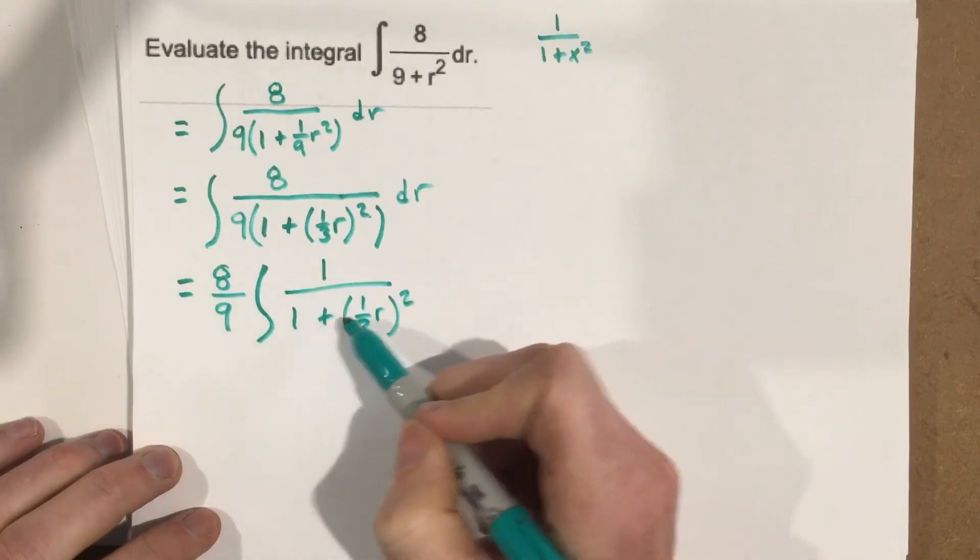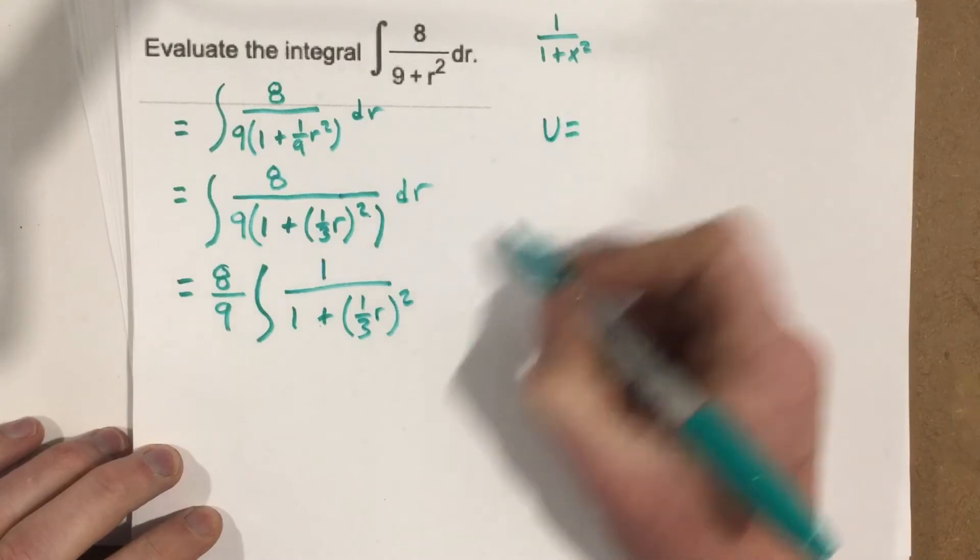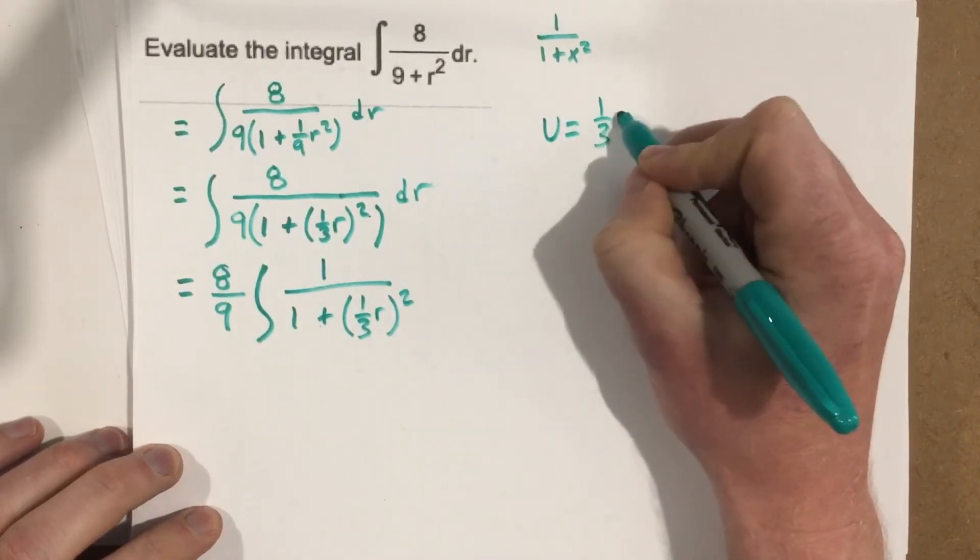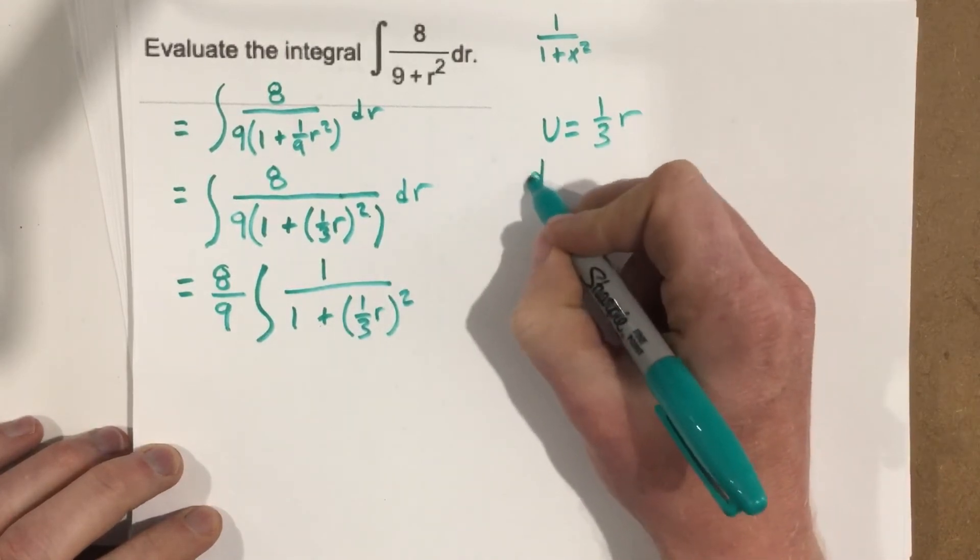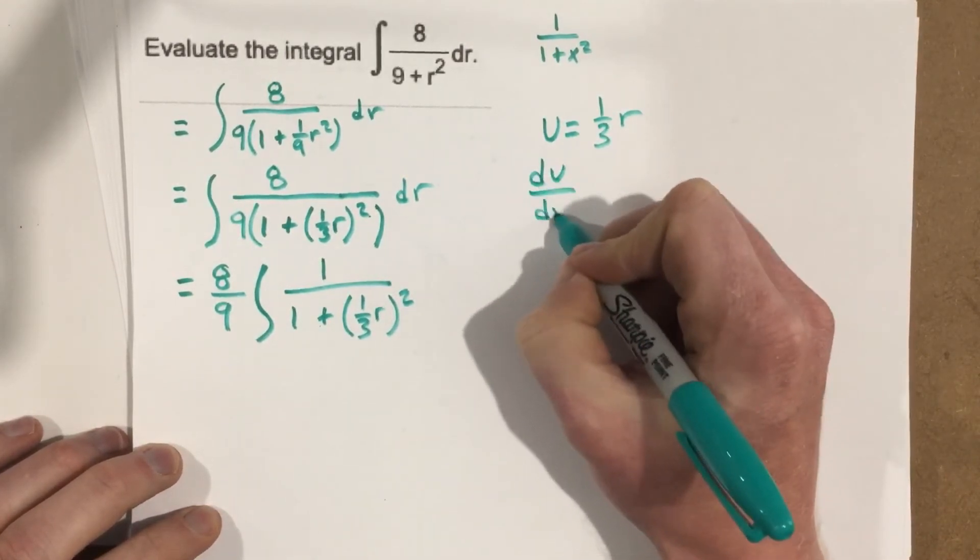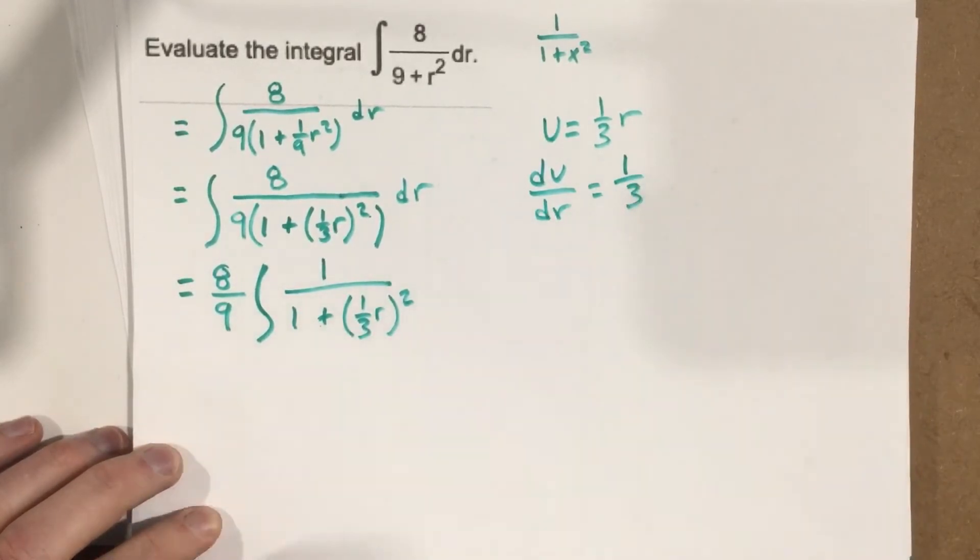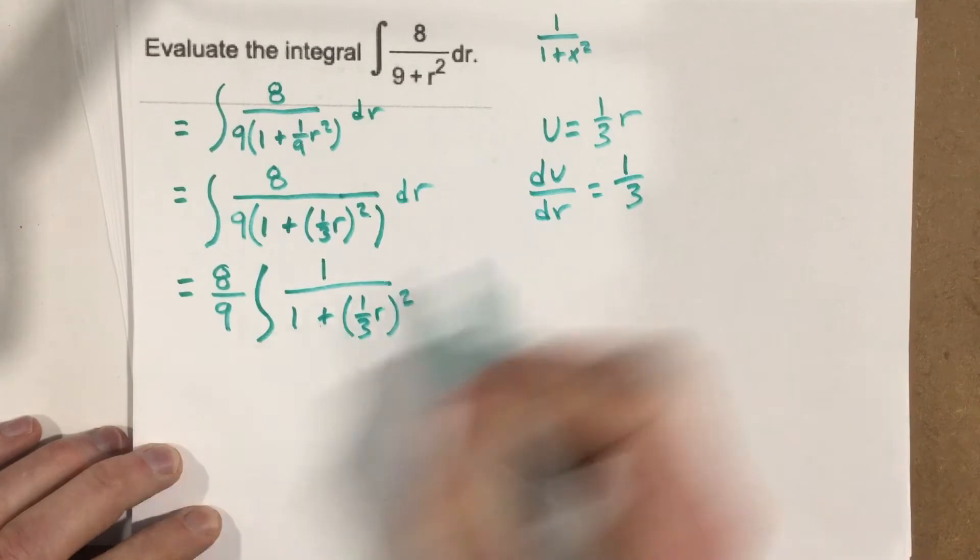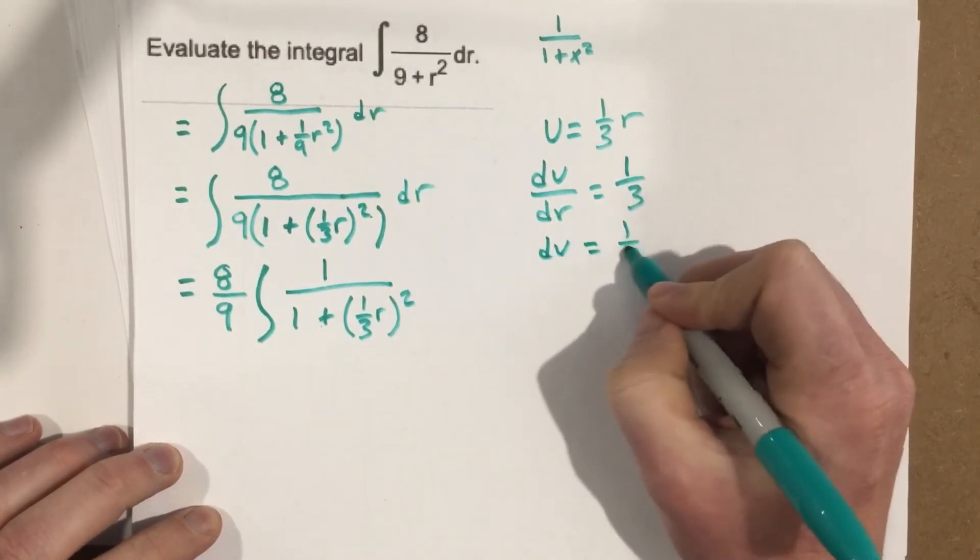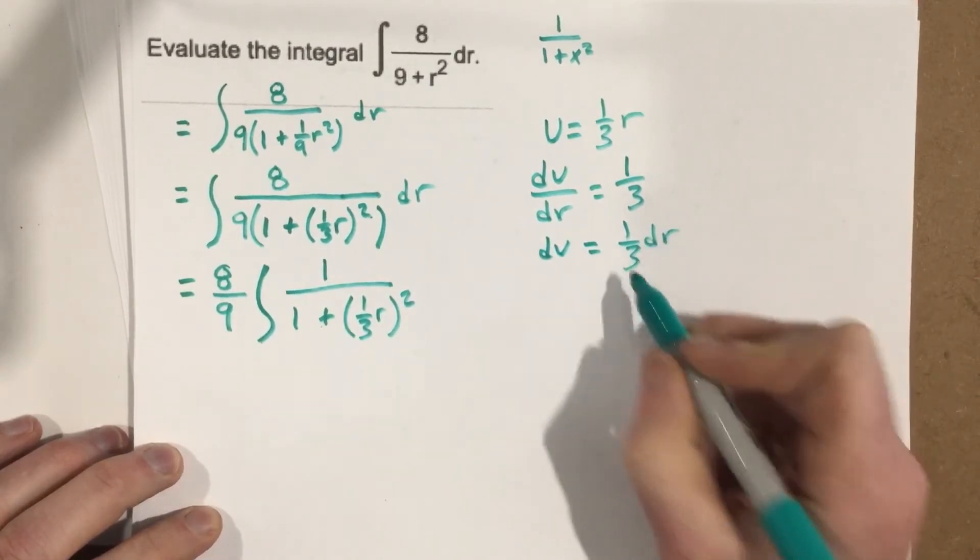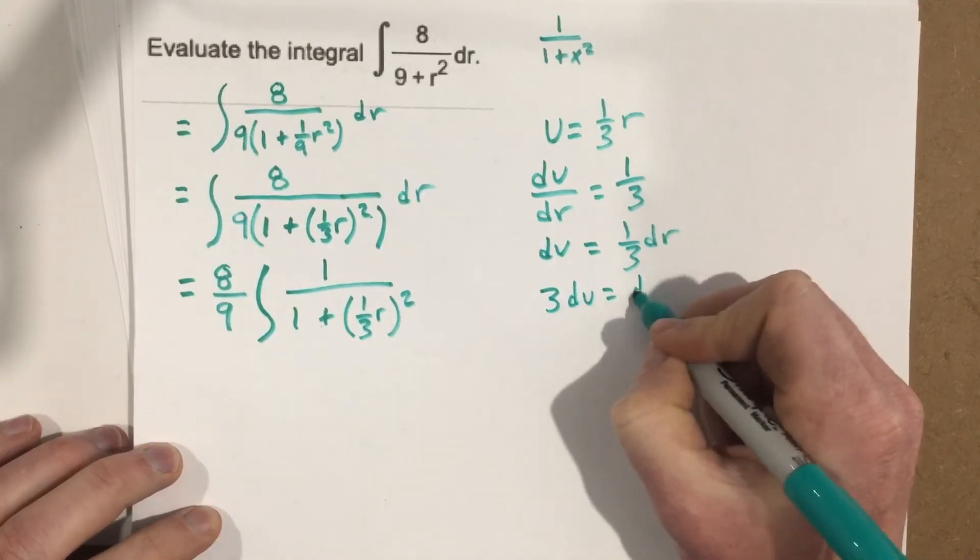I'm 1 over 1 plus something squared. I can now use u substitution. So u equals 1 3rd r. And when I do this u equals 1 3rd r, the derivative du over dr equals 1 3rd. So I multiply the dr over. That's du equals 1 3rd dr. And I multiply the 3 over the other side. So it's 3 du equals dr.